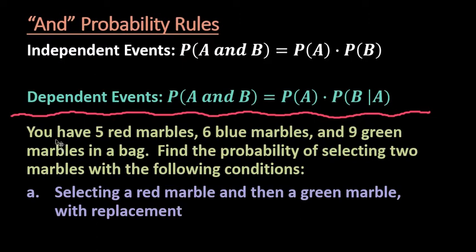What I want to do is talk to you about the two AND probability rules. The first probability rule that we use for AND is when we have independent events. An independent event means that the probability of the second event does not change given that the first event has already occurred. So if you have two events that are independent of each other, then you're going to use the rule: the probability of A and B is equal to the probability of A times the probability of B.